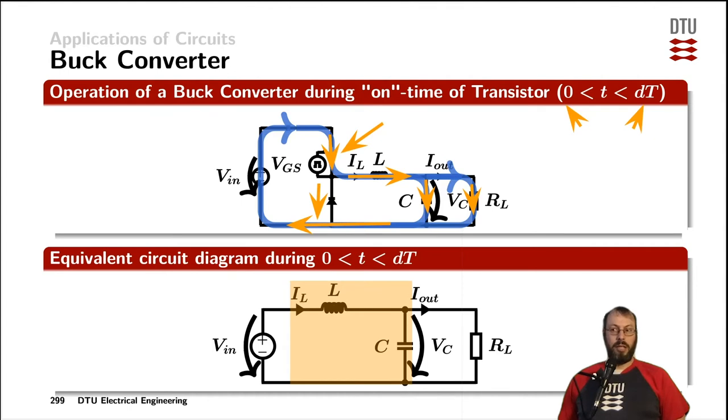During the on state of the switch, the circuit diagram when modeling the switch as a short and the diode as an open turns into a second order low pass, where the buck converter is modeled here in the orange box.